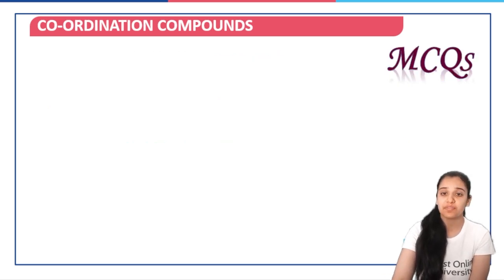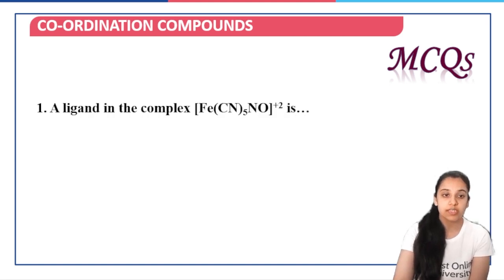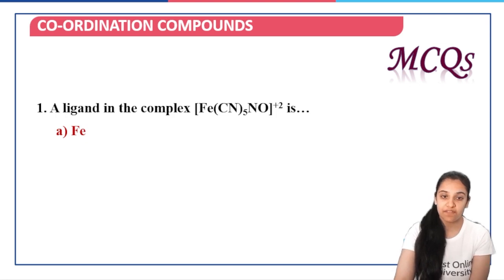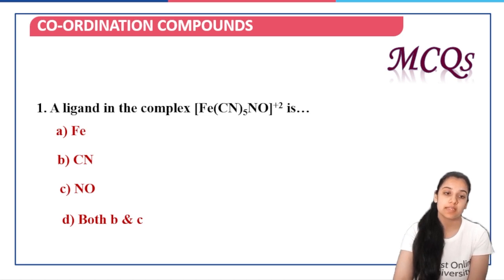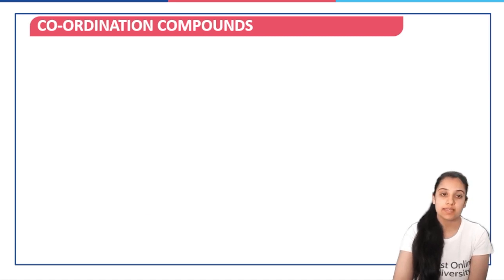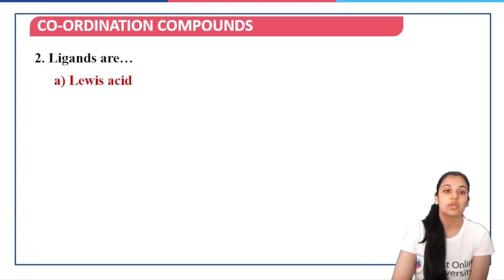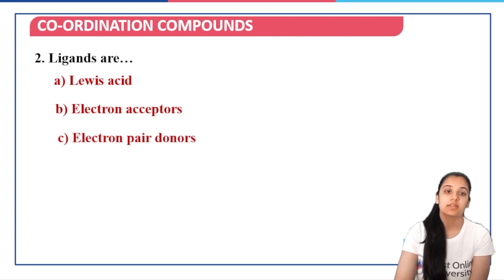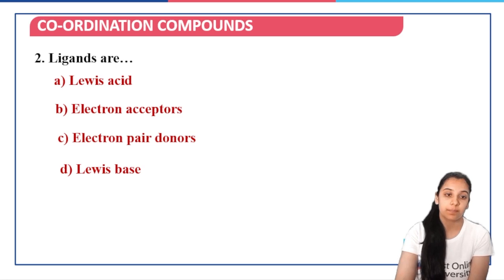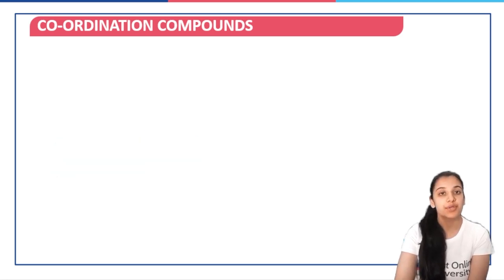Based on what we have learned, let us do a few MCQ questions. Question 1: a ligand in the complex Fe(CN)(NO) — the answer is option D, both CN and NO are ligands here. Question 2: ligands are Lewis acids or electron pair donors? Lewis acid means electron acceptor, so both options C (electron pair donor) and D (Lewis base) are the right answers.